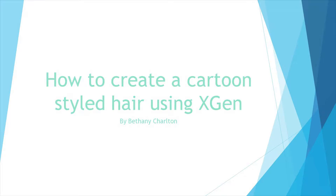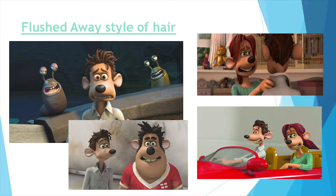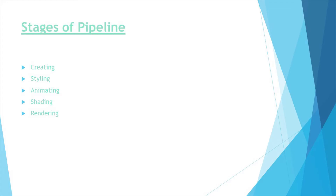Hello, today I will be talking about how to create a more cartoon styled XGen groom based on the hair of Roddy from the Aardman DreamWorks film Flushed Away. Flushed Away was created in CGI but made to feel like stop motion. Therefore, the aim of my groom is to appear like clay but use the efficiency of XGen to create and animate it. I will discuss every stage of the process including building an XGen groom, styling it, animating and shading. I will also outline my problems and successes through my three iteration process.